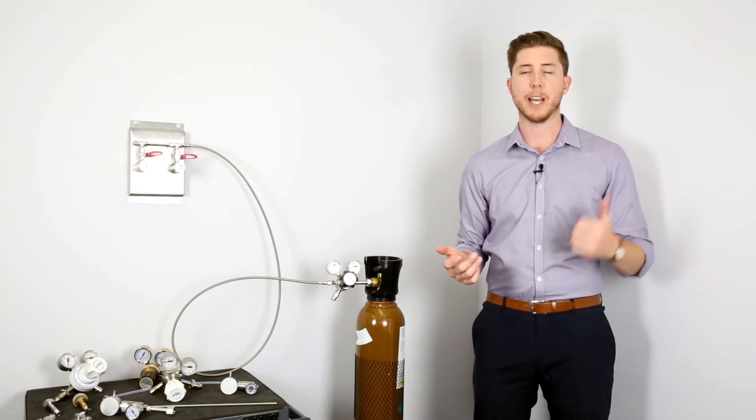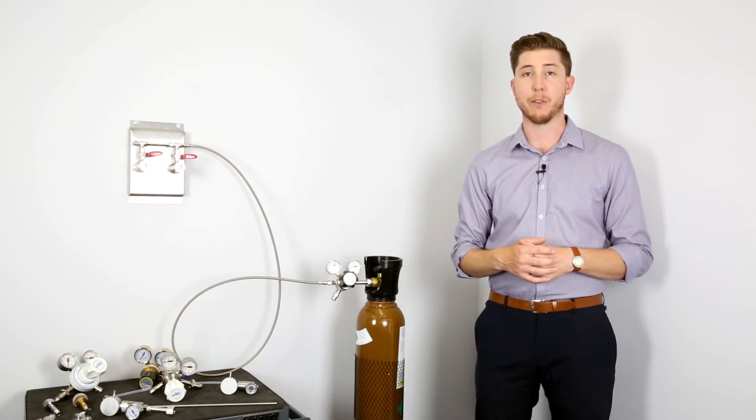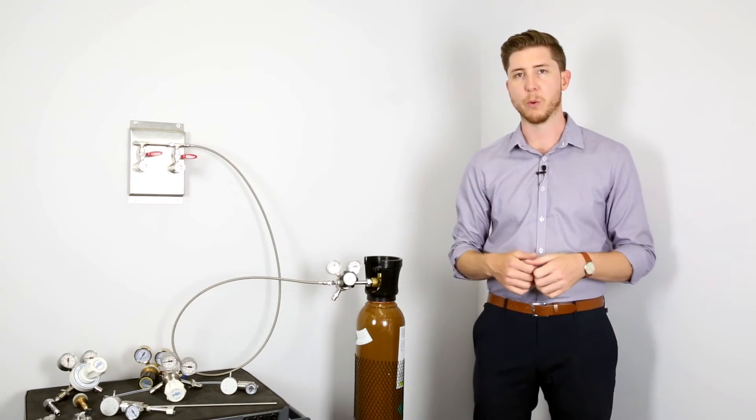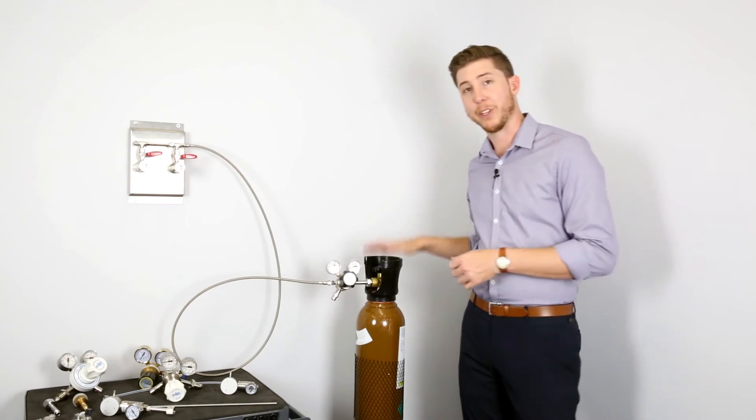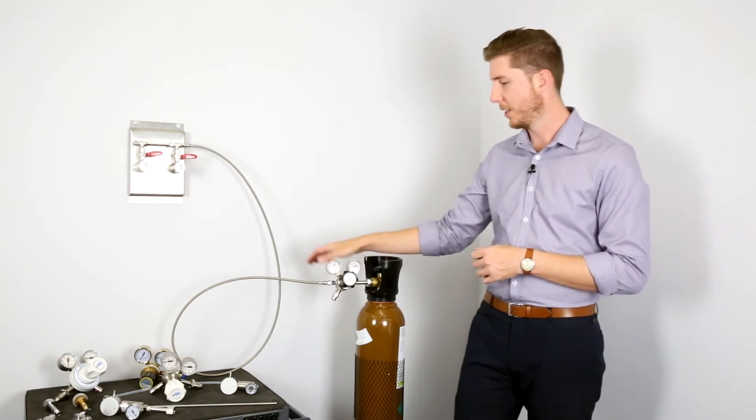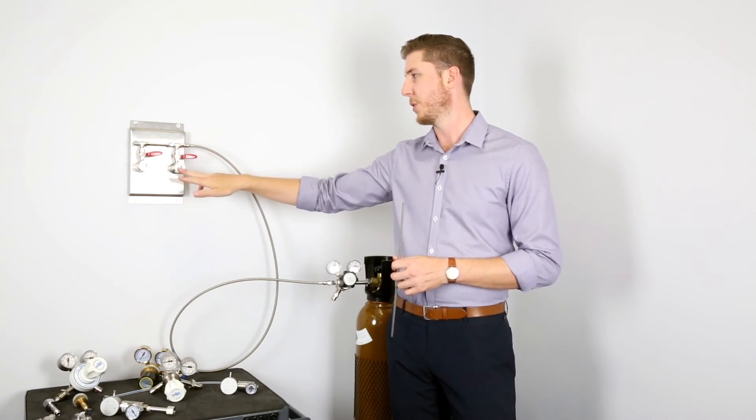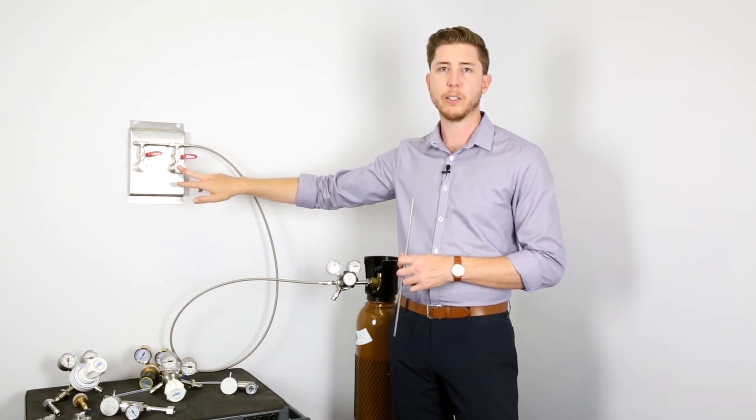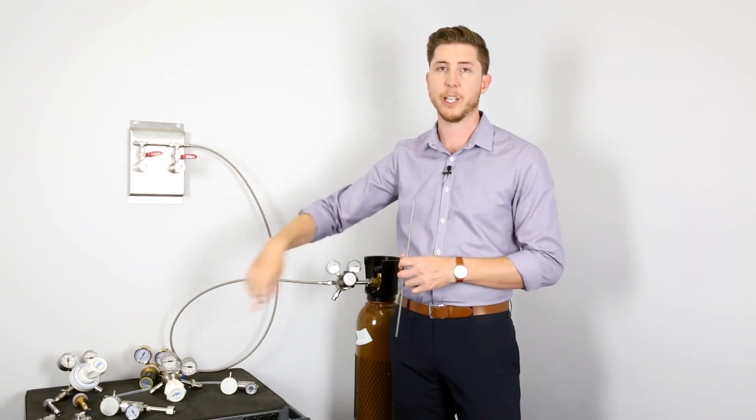If you would like to store your gas cylinders outside the room or at a greater distance than three meters a long run system will be required. A long run system consists of a gas cylinder, a pressure regulator, stainless steel tubing either flexible or rigid and an outlet panel. Here is where you'll screw in your point of use regulators and some soft tubing to connect down to your docking station.